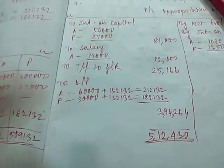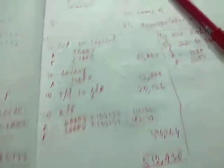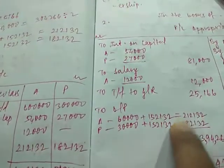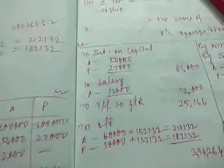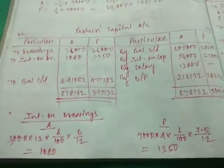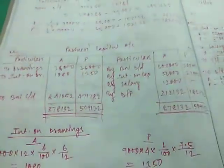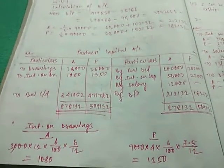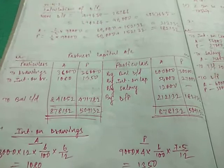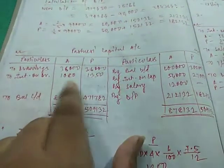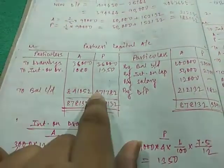You could also have done this in the working order and just write the amount here. That will also do, but you will need to write the working note number. In this manner we have completed our PL appropriation account. After we have completed our PL appropriation account, partners capital account is quite easy. Drawings, some students have made a mistake here in writing the drawings that will be 36,000 for both. 3,000 per month for A, so 12 months into 3,000 is 36,000, and 9,000 per quarter for P, 9,000 into 4 is 36,000, and the additional drawings 1080 and 1350.